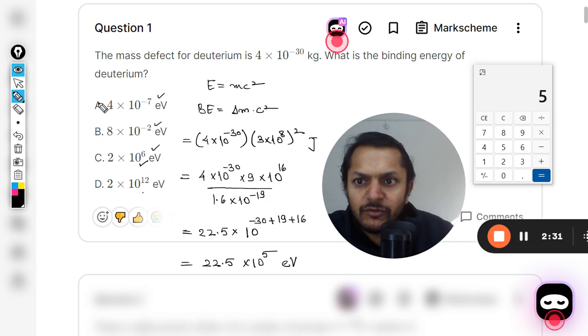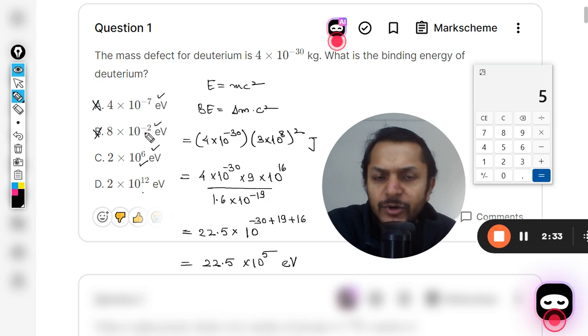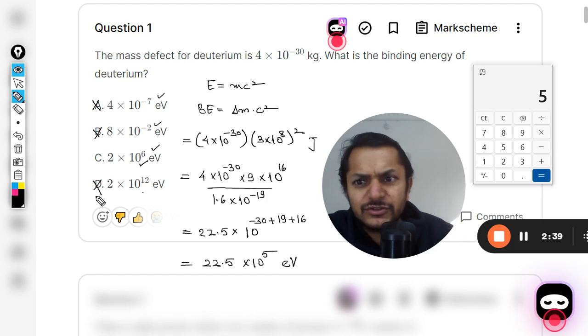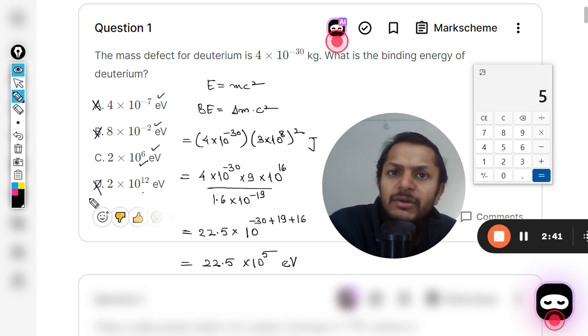But they have not written this answer like that. They are using 10^6 and 10^12 and the negative power. So A and B is definitely wrong because 10 raised to power is a positive exponent, it is not negative, and here it is definitely not 12.